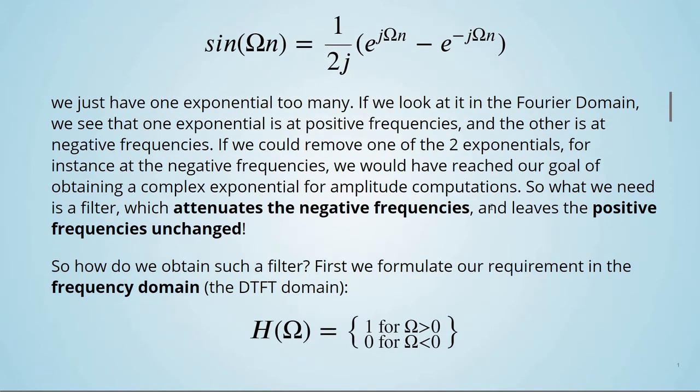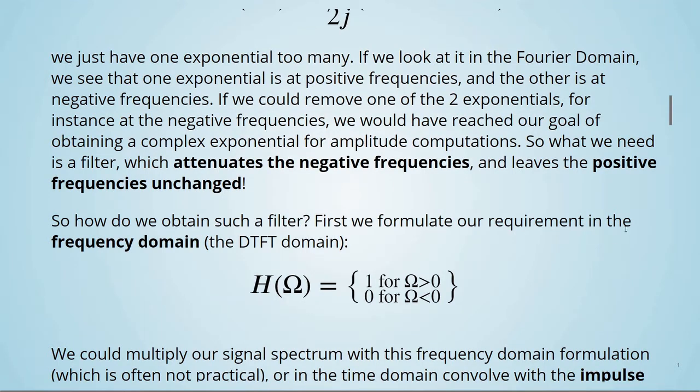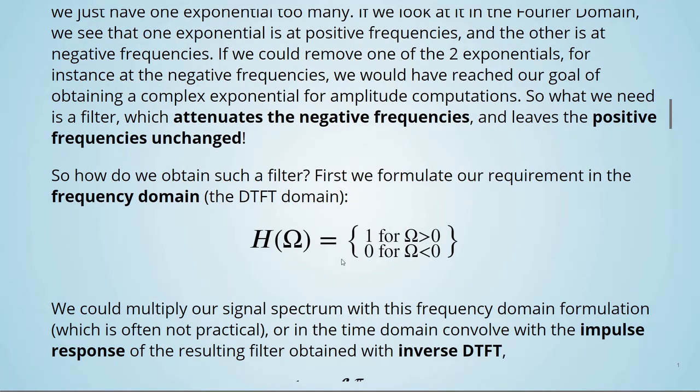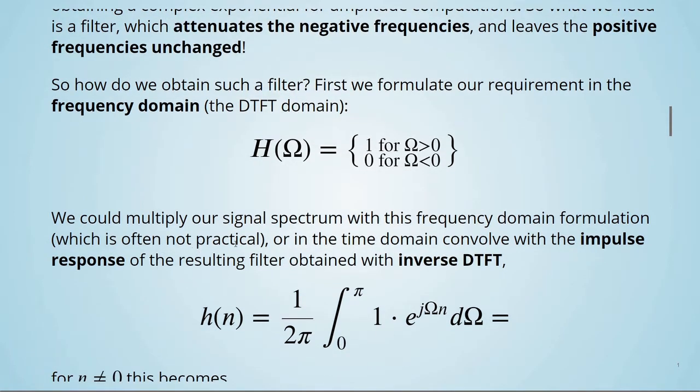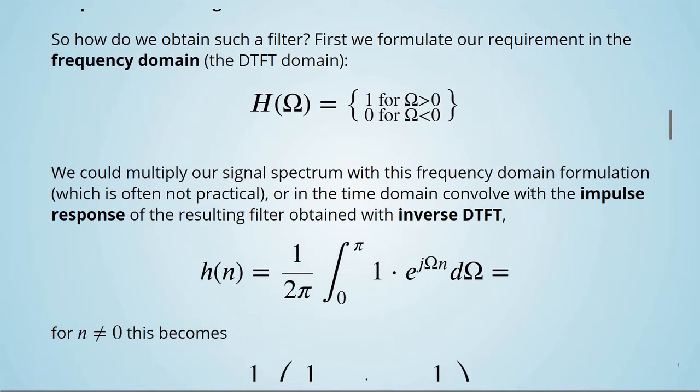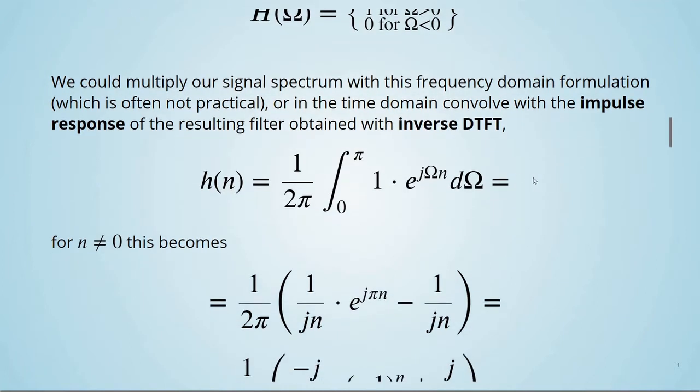So what we need is a filter which attenuates the negative frequencies and leaves the positive frequencies unchanged. How do we obtain such a filter? First, we formulate our requirement in the frequency domain, the DTFT domain. This is our requirement. It's going to be 1 for positive frequencies and 0 for negative frequencies. We could multiply our signal spectrum with this frequency domain formulation, or in the time domain, convolve with the impulse response of the resulting filter obtained with the inverse DTFT.